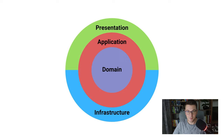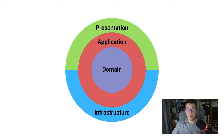Moving one level up we have the application layer. This layer acts as a sort of an orchestrator for our system. In the application layer we will define our most important use cases. Typically this layer is implemented as a set of application services, or if you are using the CQRS pattern, here you will see commands and queries. This is also the approach we will see in the practical example a little later in this video.